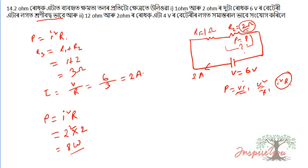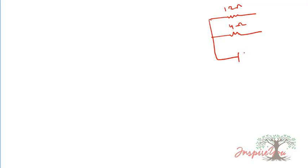Question 15 involves 12 ohm and 2 ohm resistors with a 4 volt battery. Also 12 ohm, 4 ohm, 5 volt configuration. 12 ohm, 2 ohm, 4 volt battery connected.